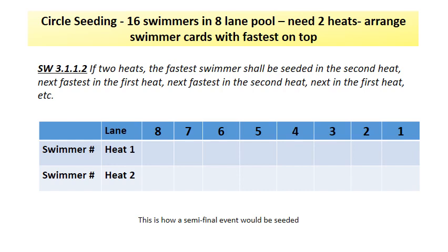This next seating rule is for events having nine to sixteen swimmers in an eight-lane pool seated slowest to fastest. SW 3.1.1.2: if you have two heats, the fastest swimmer shall be seated in the second heat, the next fastest in the first heat, the next fastest in the second heat, the next in the first heat, and so on.